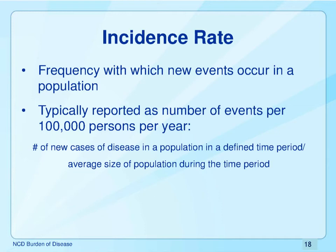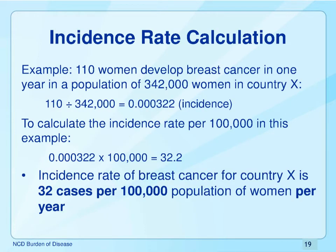Here is a sample incidence rate calculation. We have 110 women who developed breast cancer over the last year in a population of 342,000 women residing in country X. To calculate incidence rate, we simply divide 110 by 342,000 and then multiply by 100,000 to give us an incidence rate of 32 cases of breast cancer per 100,000 population per year. This is a useful rate as we know how many cases there are and can compare them to other jurisdictions such as other states in the FSM, other members of the USAPI, or other developing areas such as the Caribbean Basin.